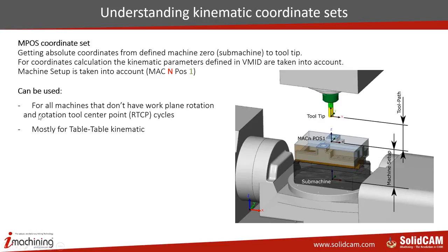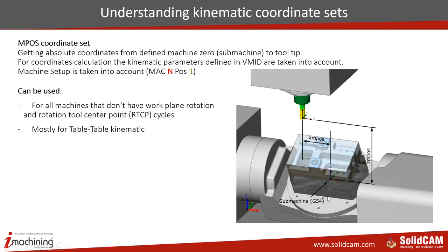We are pushing SolidCAM to calculate all values from our submachine to the tooltip. This allows you to control all your positioning and simultaneous movements on machines that don't have smart cycles. It's mostly used for the table-table kinematic. The submachine is not rotated together with the table rotation — the G54 is always stationary. All positions you get are X M-Pose, Z M-Pose.